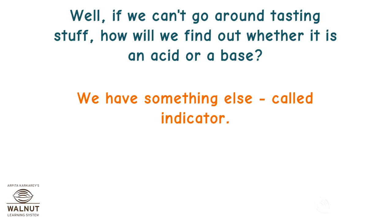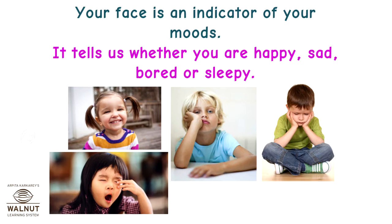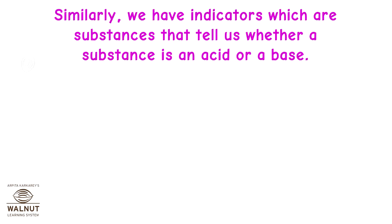We have something else — it is called an indicator. An indicator is something that indicates or tells us something. Your face is an indicator of your moods; it tells us whether you are happy, sad, bored or sleepy. Similarly, we have indicators which are substances that tell us whether a substance is an acid or a base.